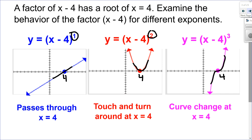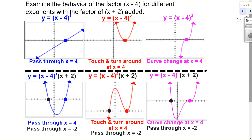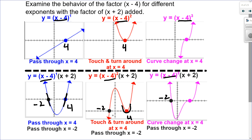Let's take that factor and combine it with another factor. I'm going to take x minus 4 to the exponent of 1, squared, and cubed, and add a new factor of x plus 2 to the exponent of 1. With x plus 2, I have an x-intercept of negative 2. At x-intercept 4, I'm still passing through for exponent 1, touching and turning around for exponent 2, and a curve change for exponent 3. At negative 2, I'm passing through in all cases. So all those same rules are applying even if I add on another factor.